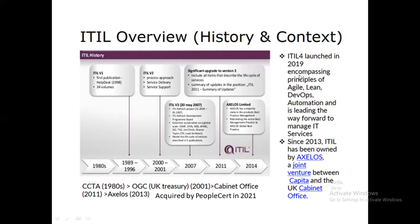ITIL 4, launched in 2019, also incorporates principles of agile, lean, DevOps, and automation. The feedback on version 3 was that it was not agile enough, did not support DevOps, and was too heavy in terms of processes, principles, and roles. So they made it leaner and more agile to align with latest market technologies. Right now every company with ITIL as a background is trying to upgrade to version 4 to encompass DevOps and automation, because you cannot work with a traditional mindset.